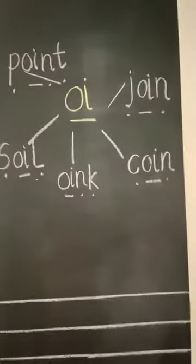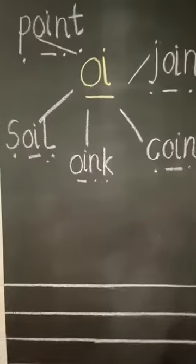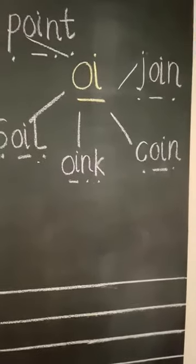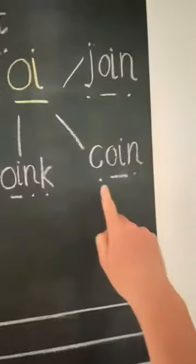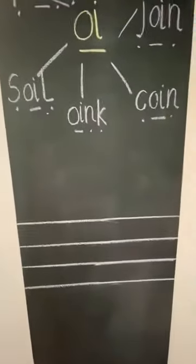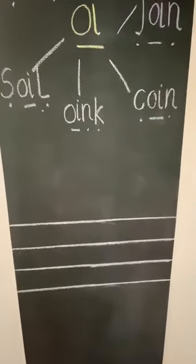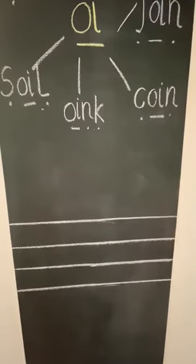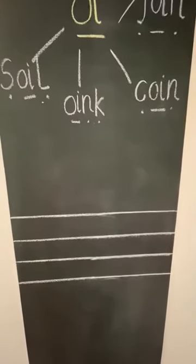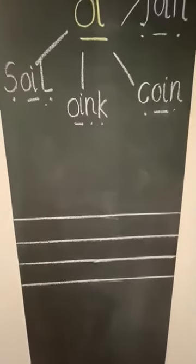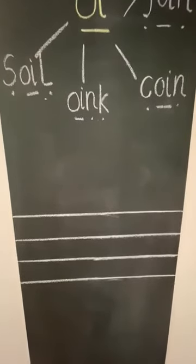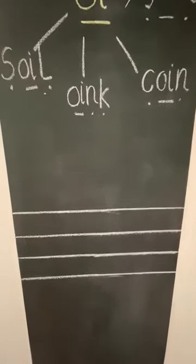There we go. So we're going to write a sentence now and we're going to use the word coin. Coin in the sentence: I can see a big silver coin on the grass. It's quite a long sentence, isn't it? I can see a big silver coin on the grass.